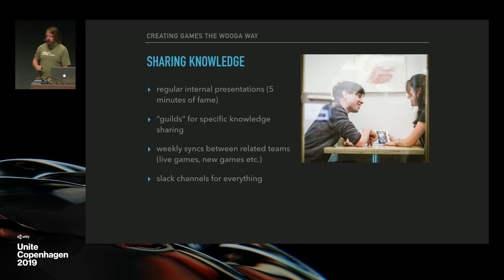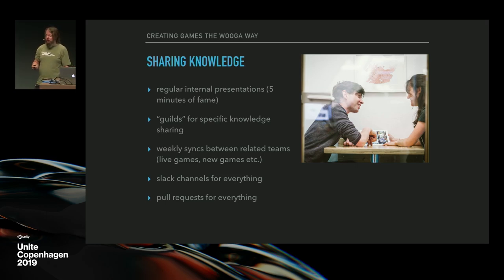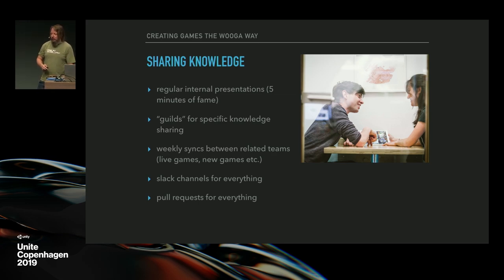For engineering especially, one thing is super important: we do pull requests for everything. Whenever you commit something to any of our repositories, you have to go through a pull request and code review. That's not because we don't trust our engineers — we see it more as a way of sharing knowledge. If you have to show your code to someone and talk about it, both engineers gain something. A nice side effect is it radically reduces the bus factor.